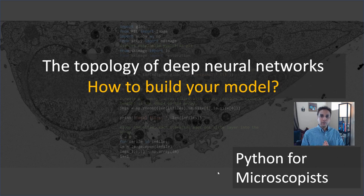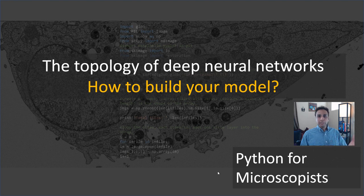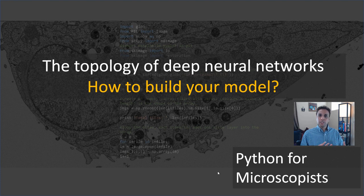Hey guys, you're watching Python tutorial videos on my YouTube channel, Python for Microscopists. In today's tutorial, let's have a look at topology of deep neural networks. Topology is basically how various components of some system are interrelated and arranged. So when we talk about deep learning, what we mean is how the various components of our deep neural networks are interrelated and arranged.